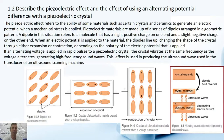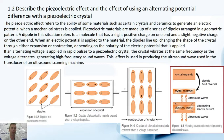Piezo materials are made up of a series of dipoles arranged in a geometric pattern as shown in figure 14.2. A dipole refers to a molecule that has a slight positive charge on one end and a slight negative charge on the other end, as you may have learned in chemistry. When an electric potential is applied to a material, the dipoles line up as shown in figure 14.3, changing the shape of the crystal through either expansion or contraction, depending on the polarity of the electric potential applied.